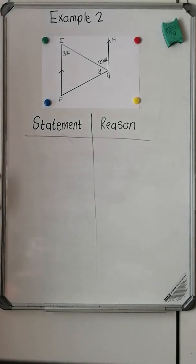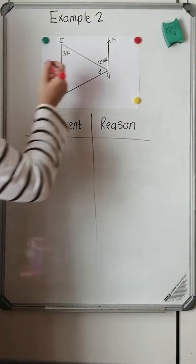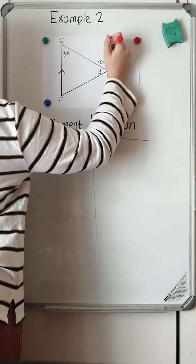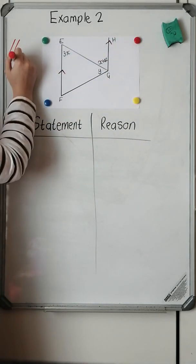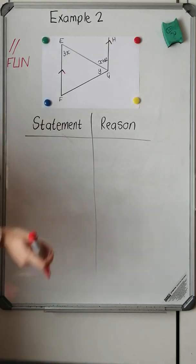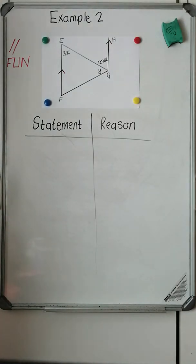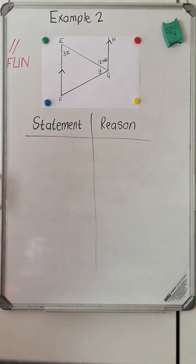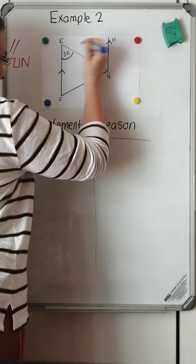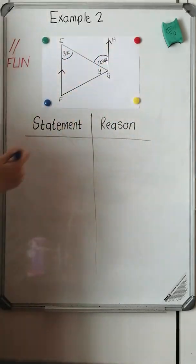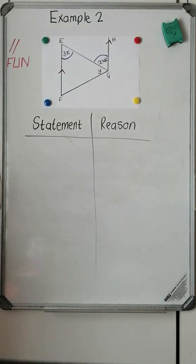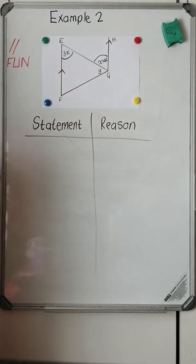This is our second example. I notice I've got parallel lines. As soon as I see parallel lines, I must be thinking of finding fun angles. I also have a triangle EFG. We're told to solve for x and y. When looking for x, I notice here's an x and here's an x — the same variable in two different places. So I need to relate these two together and form an equation.